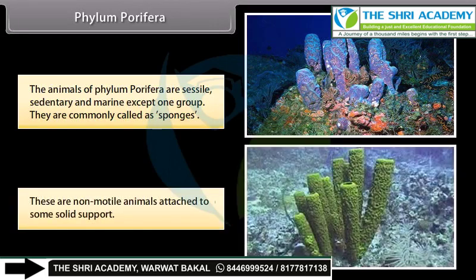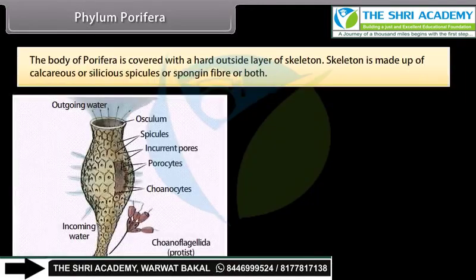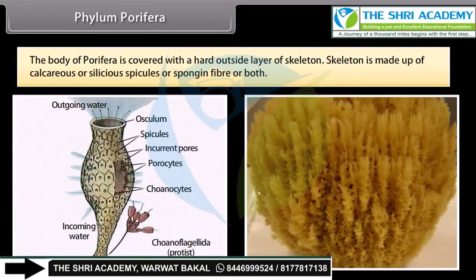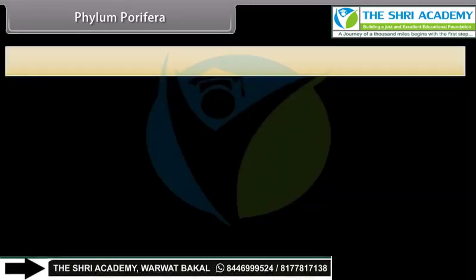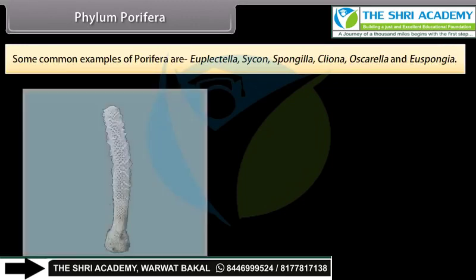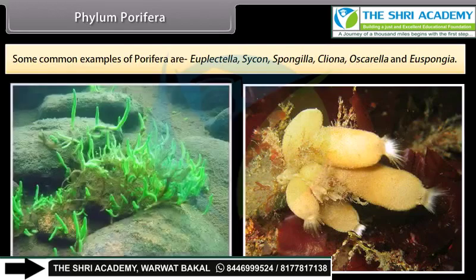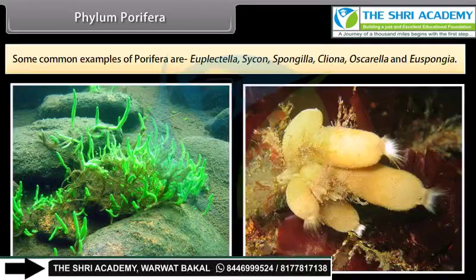These are non-motile animals attached to some solid support. The body of Porifera is covered with a hard outside layer of skeleton. Skeleton is made up of calcareous or siliceous spicules or spongin fiber or both. The body design has very minimal differentiation and division into tissues. They are multicellular, diploblastic, and radially or asymmetrical animals. Some common examples of Porifera are Euplectella, Sycon, Spongilla, Cliona, Oscarella, and Euspongia.